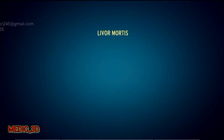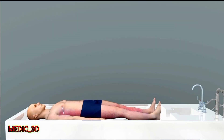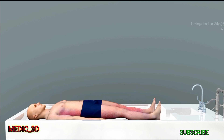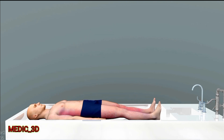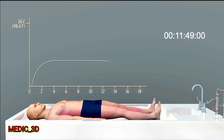Livor mortis: livor means bluish and mortis means death. Livor mortis is a bluish or purplish-red discoloration resulting from the gravitational settling of blood in the toneless capillaries and venules of the dependent parts of the dead body. This occurs within 4 hours after death and reaches its maximum at 6 to 12 hours after death.